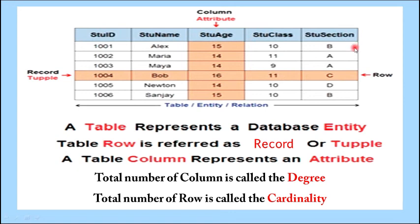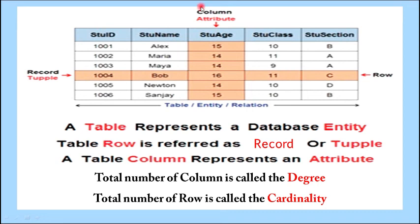Counting the rows: row 1, 2, 3, 4, 5, 6, 7 — so the cardinality of this table is 7 and the degree is 5.